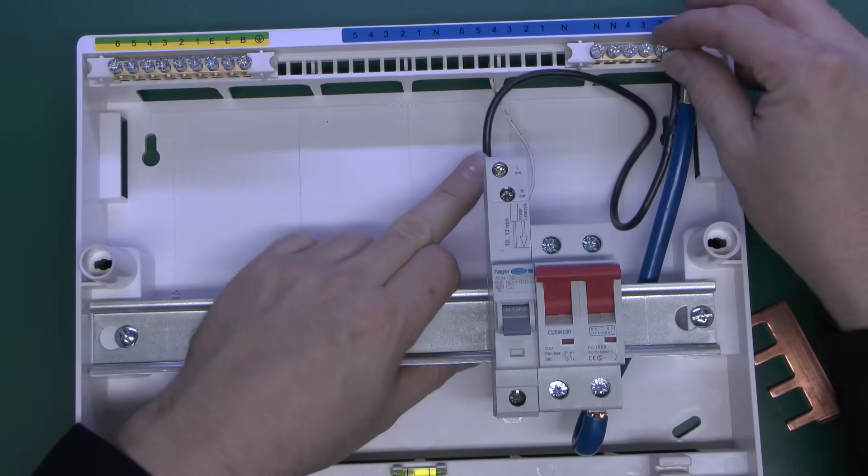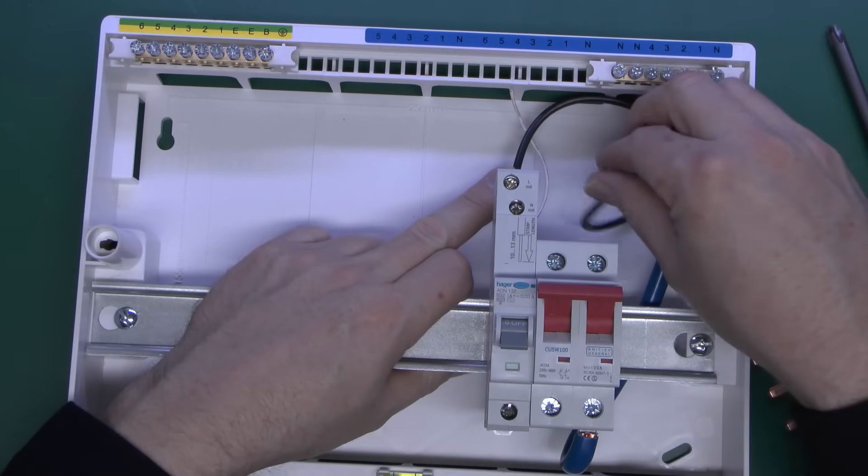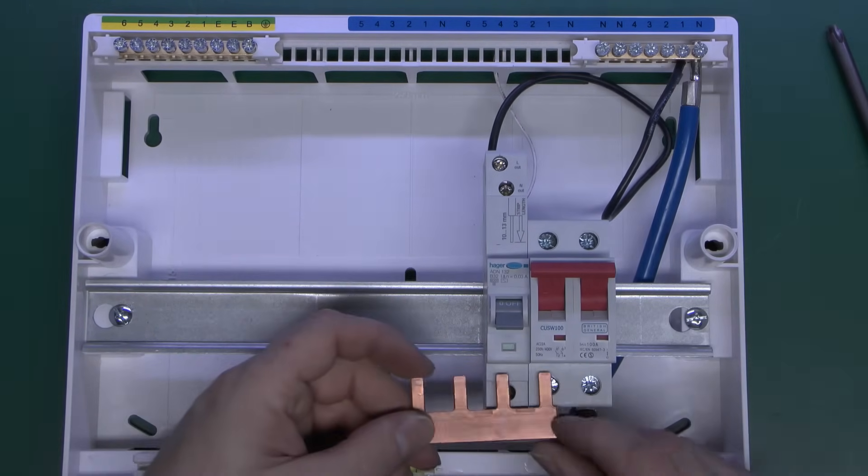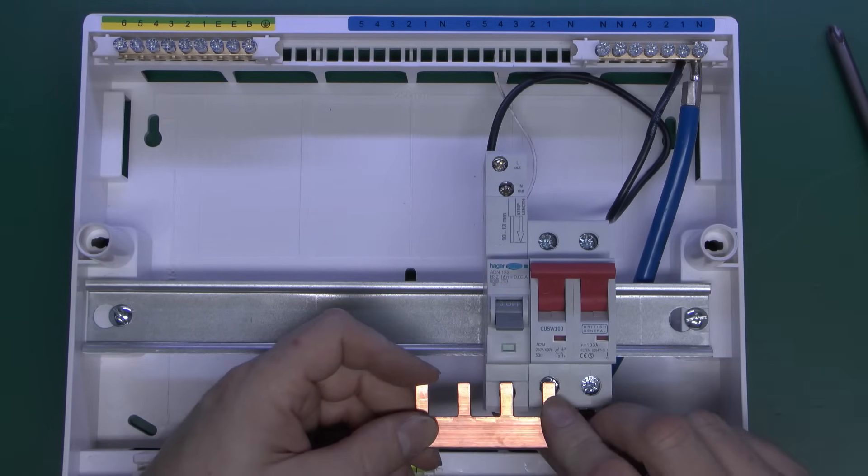So none of the circuit wiring actually attaches to the neutral bar it's purely only the flying lead from the RCBO which goes over there. And just as before the line bus bar just slots into the bottom here so connects across to all of the devices.